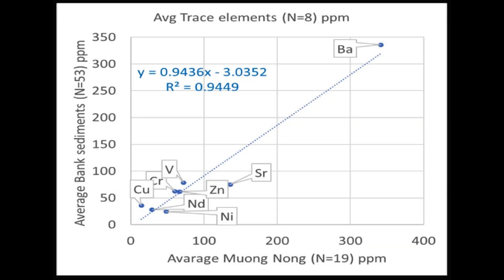Comparing the Mekong river bank sediments to available muang-nong trace elements gives an R-square value of 0.9449 — almost as high a value as for major elements — indicating that bank sediments could be the precursors to muang-nong tektites.